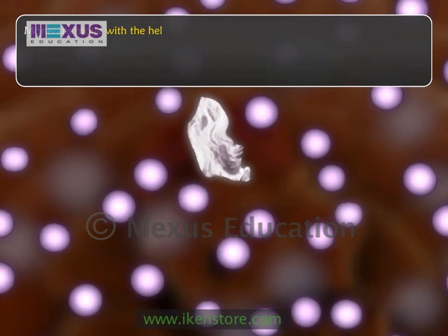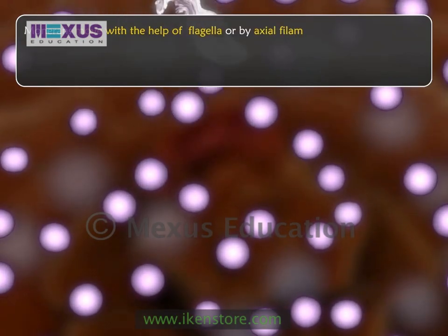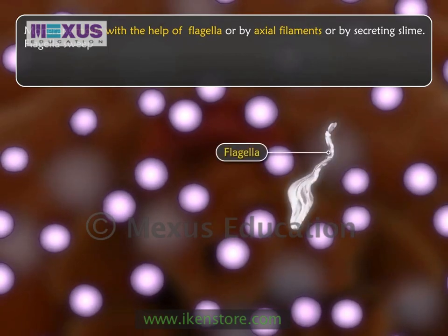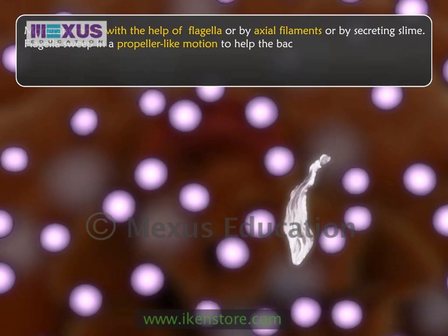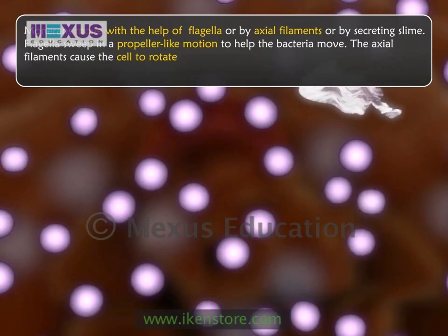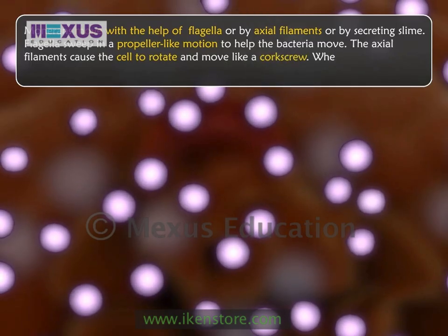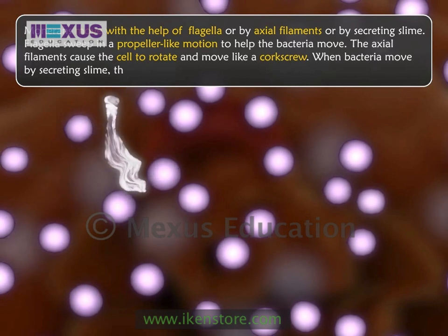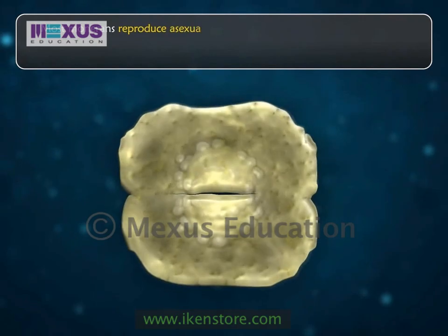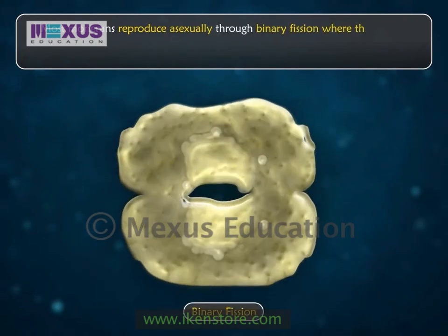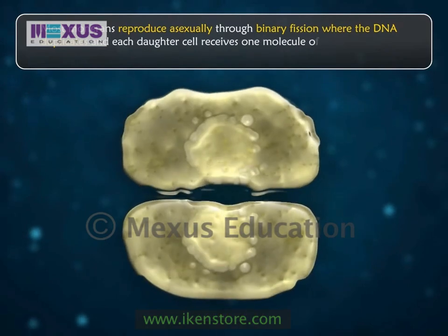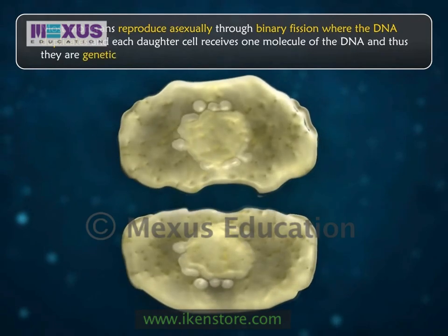Monerans move with the help of flagella, axial filaments, or by secreting slime. Flagella sweep in a propeller-like motion to help the bacteria move. The axial filaments cause the cell to rotate and move like a corkscrew. When bacteria move by secreting slime, they glide along surfaces. Most Monerans reproduce asexually through binary fission, where the DNA duplicates and each daughter cell receives one molecule of DNA, making them genetically identical.